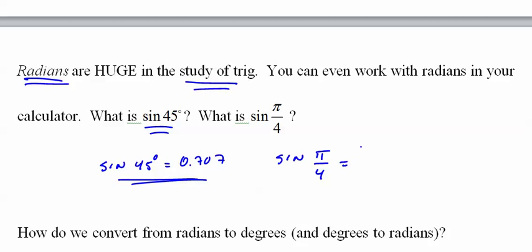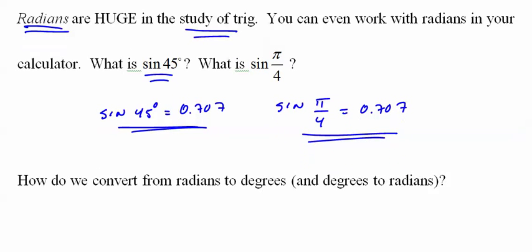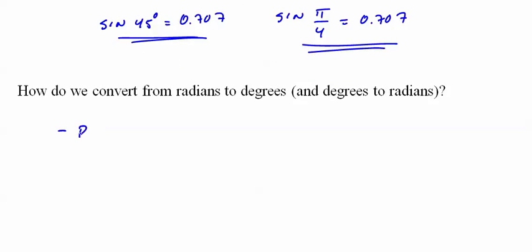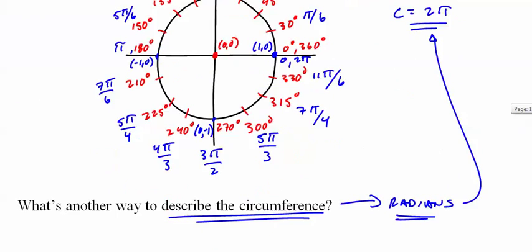One is using the measurement of degrees and one is using the measurement of radians. How do we convert from radians to degrees? Well, two ways. One, just pull off the unit circle. All the equivalent degrees and radians are shown on there. So if I say 5π/4, you go back to your unit circle and you say 225 degrees.